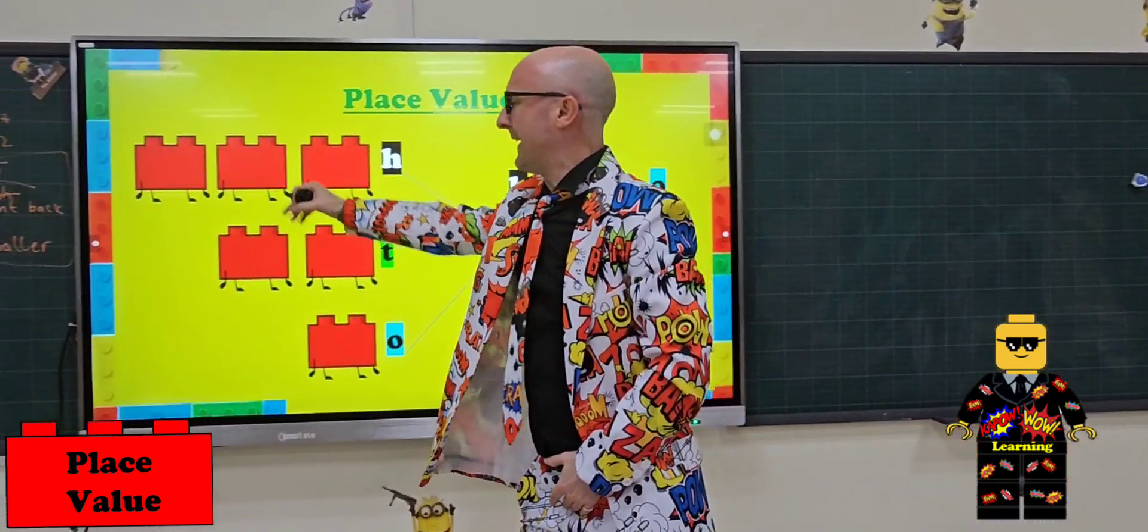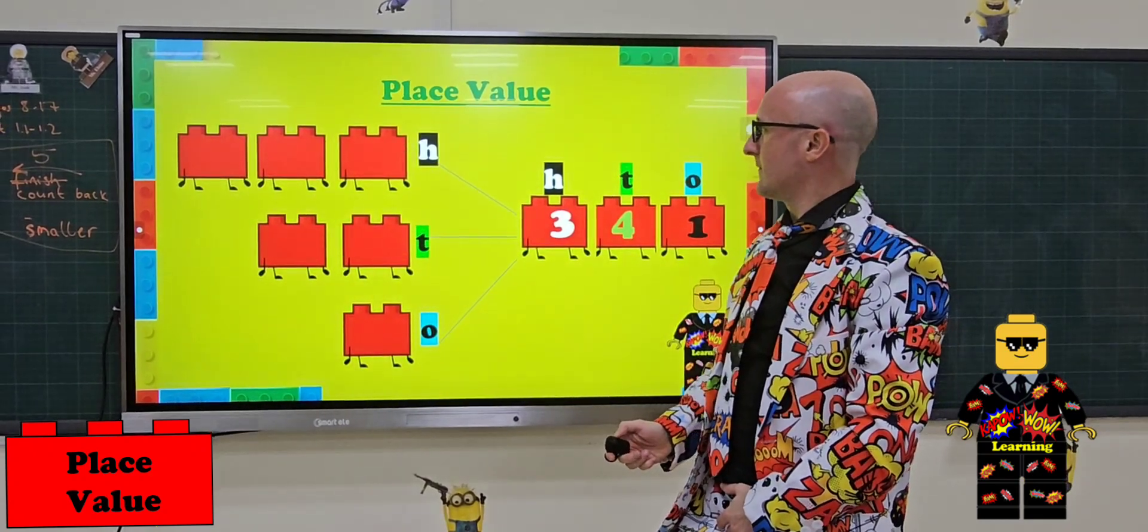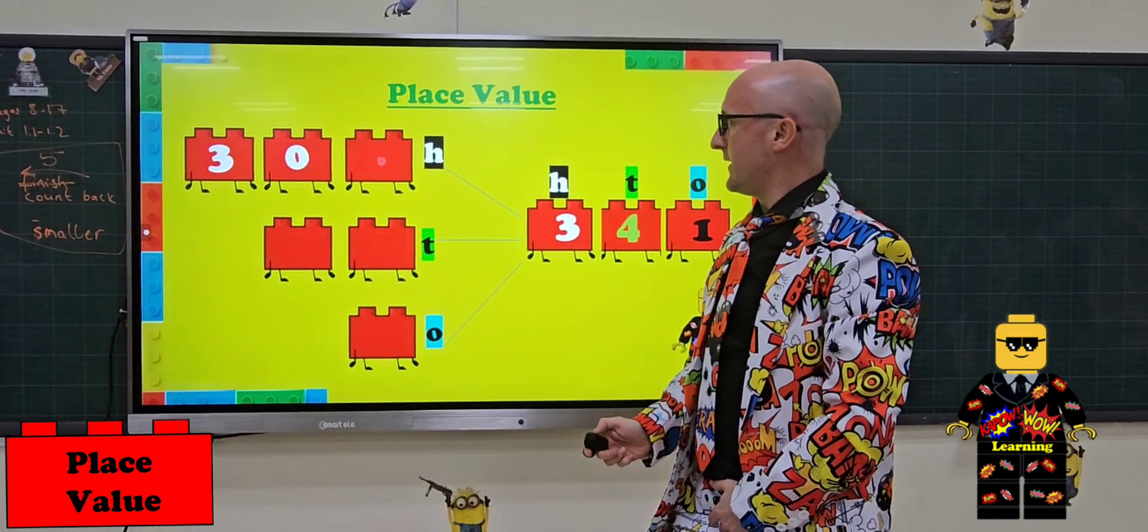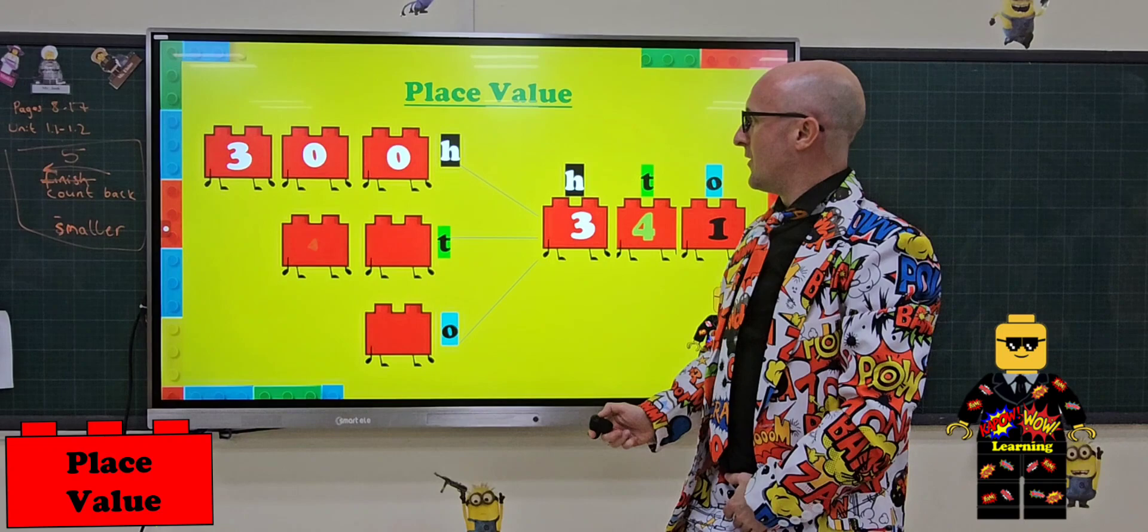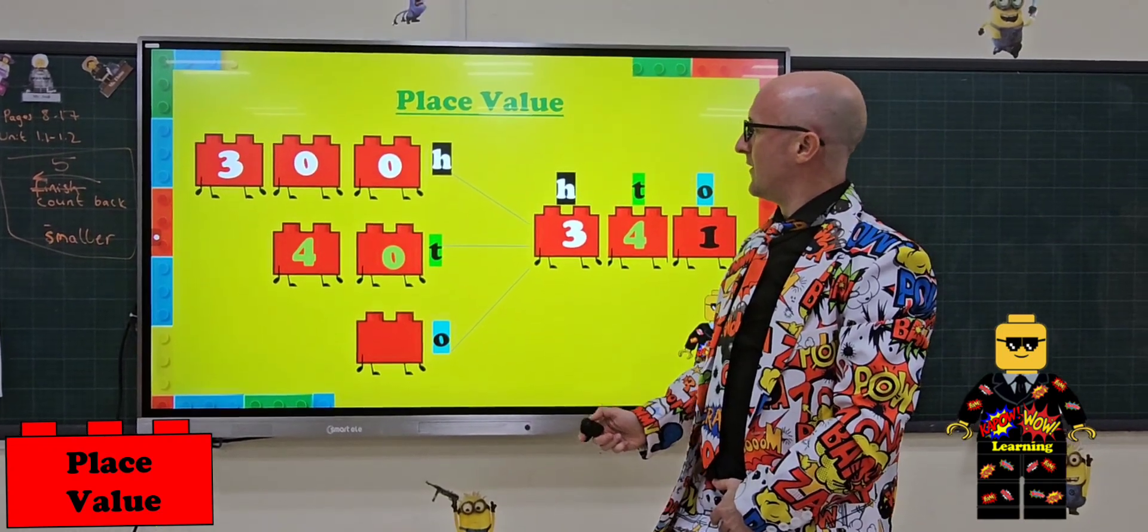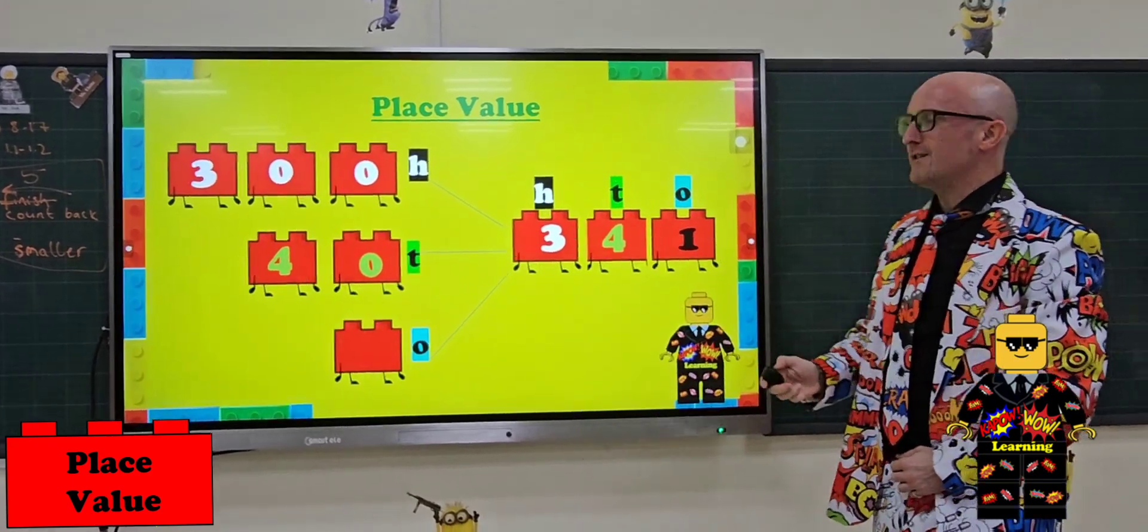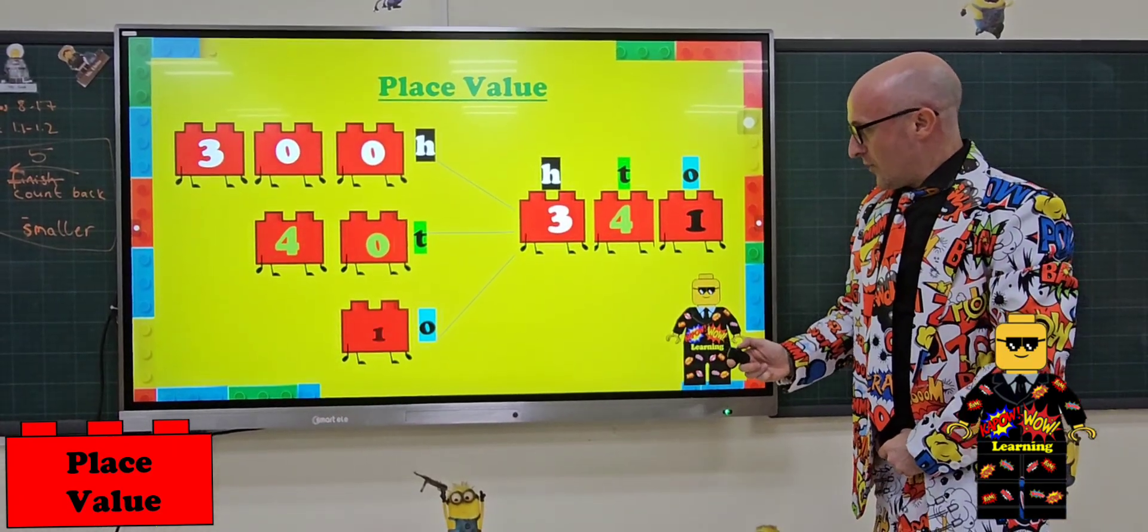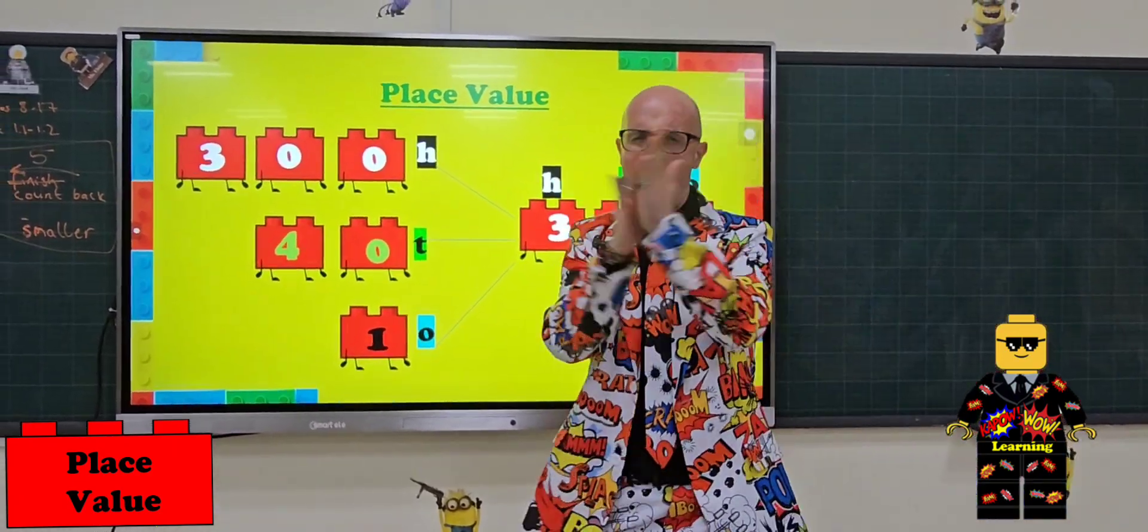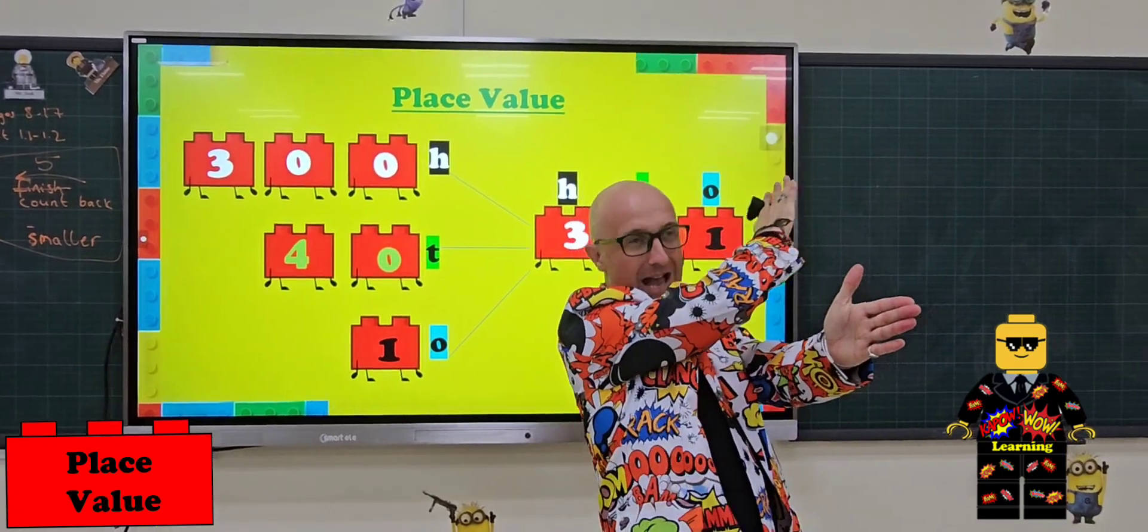So Fanna, what should we put here? We need to put the 3 on the 300, the 4 on the 10s and... Yep, 300 in the 100s, 40 for 10s and 1 on the 1s. Wow, give her a Kapowow clap! That's a Kapowow clap.